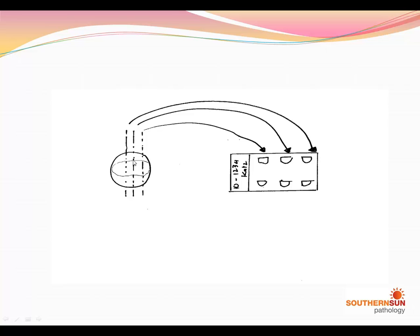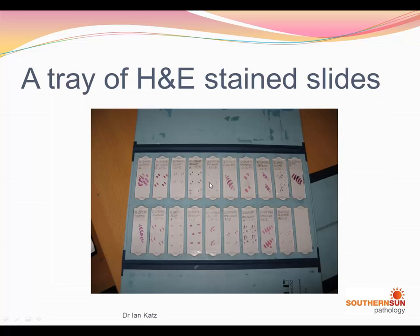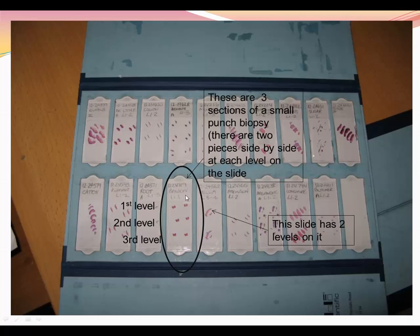This is what a tray of slides looks like once they've been prepared and stained. In this wider example, you can see these are three sections of a punch biopsy, and the first section of an ellipse of skin which has been cut into one, two, three, four, five, six, seven slices of a bread loaf.